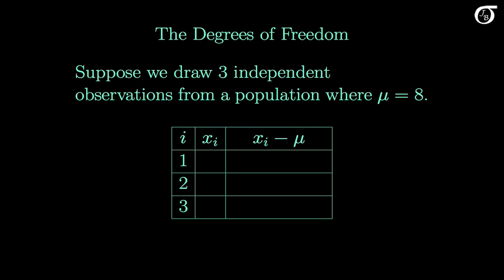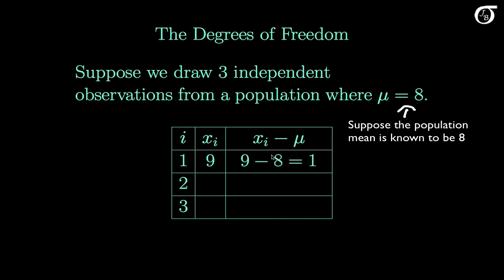Suppose we draw three independent observations from a population where mu is equal to 8, and suppose it is known that mu equals 8 in this scenario. The first value we draw can be anything — suppose we get 9. We can calculate this difference, 9 minus the true mean of 8, and see that the first observation is 1 unit away from the true mean. The second value can also be anything — suppose it's 4. The third value can also be anything. We drew three independent values, and there are three degrees of freedom — these three numbers are free to be any value.